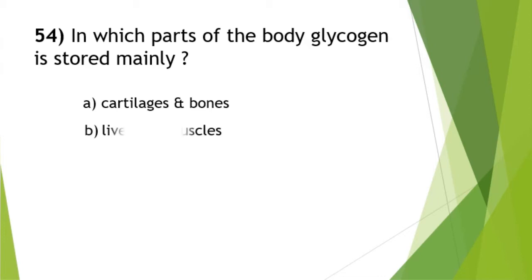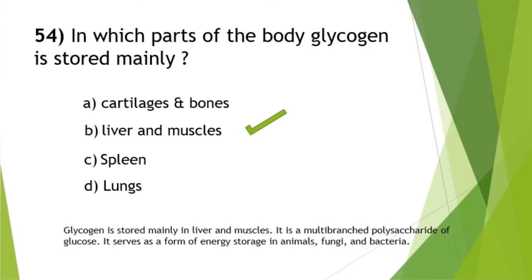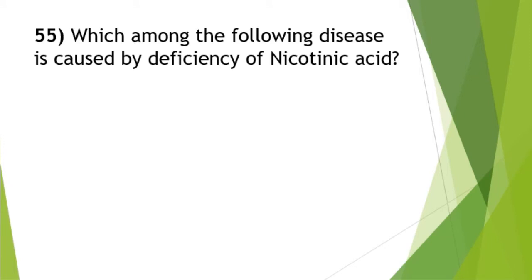Next question: in which parts of the body is glycogen stored mainly? This is a very important question from the biology portion. The answer is option B — liver and muscles. Glycogen is mainly stored in the human body in the liver and muscles. NCERT textbooks clearly define this — refer to them for complete details.